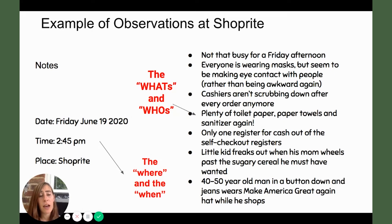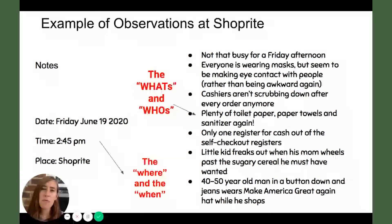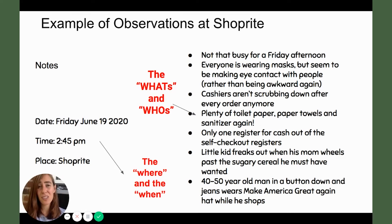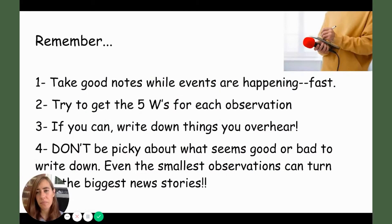Two other things I noticed: a little kid freaking out when his mom wheeled past the sugary cereal aisle — he was having a complete tantrum and she was trying to play it cool. Heightened emotions — I wrote it down. I also noticed there's a lot of sanitizer and toilet paper and paper towels again. The sanitizer thing doesn't seem like a big story, but I wrote it down as an observation because it is out of the ordinary. There really hasn't been a lot of sanitizer lately, so now that there is, that could be a potential news story about stores starting to restock.